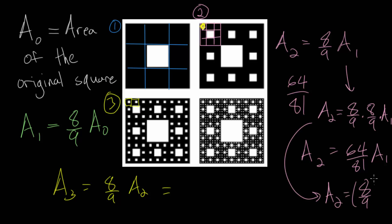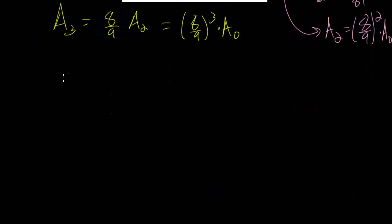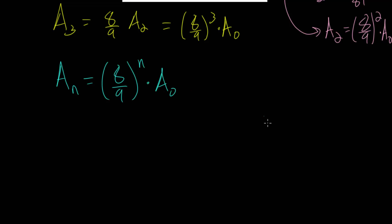So a sub two is eight ninths squared multiplied by the original area a sub zero. Applying this formula to a sub three gives eight over nine to the third power multiplied by the original area. Generalizing this pattern, after the fourth step we have eight ninths to the fourth power times the original area, and in the most general case, after the nth step we have eight over nine raised to the nth power multiplied by the original area.